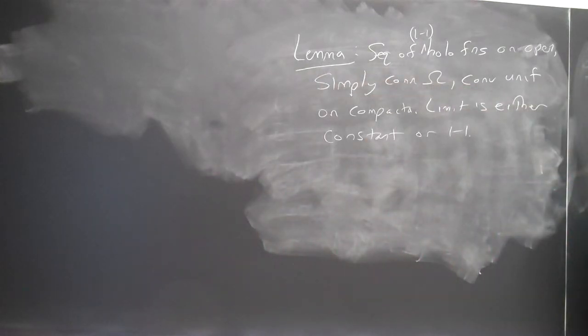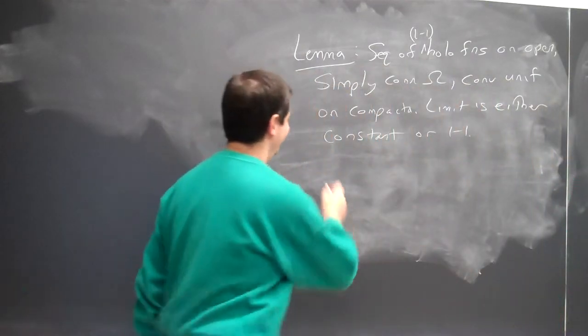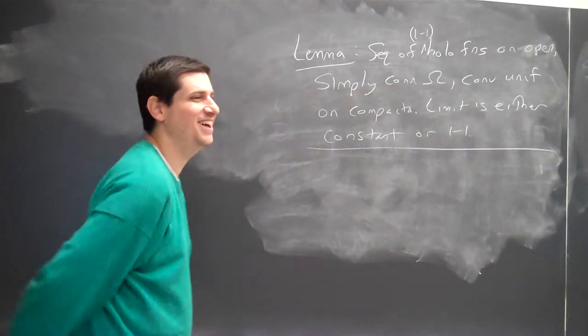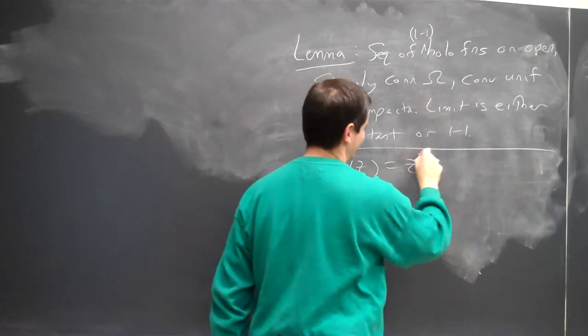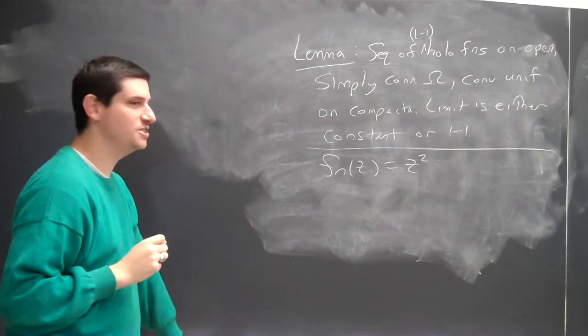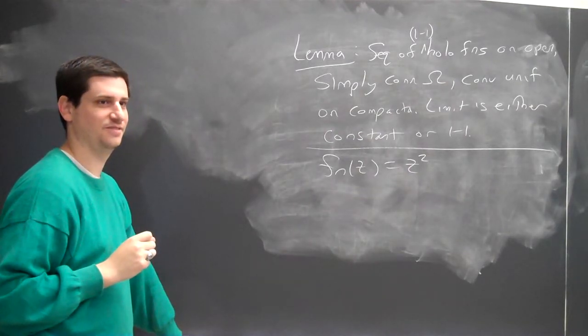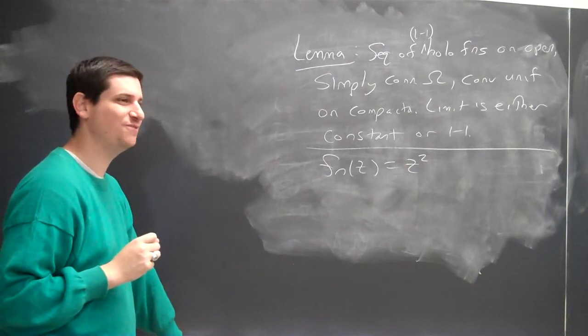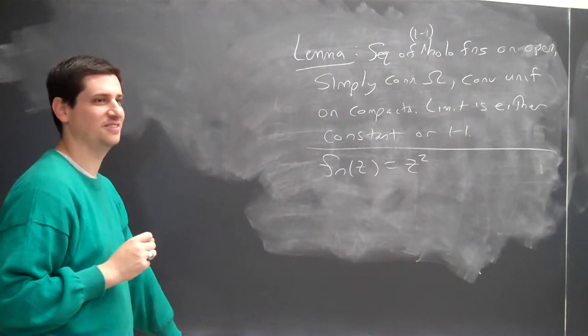Z-squared? Yes! So f_n of z is z-squared. Does this converge uniformly on compacta? The convergence for this function, if every function in my sequence is the same, the convergence is pretty easy to get.